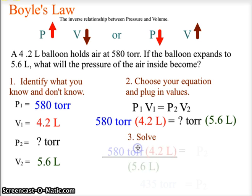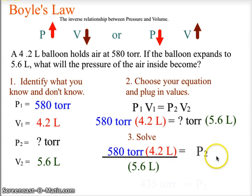We now are going to solve. The algebra brings the 5.6 over to the other side to divide, and that will equal P2 on its own. The calculation allows us to cancel liters.